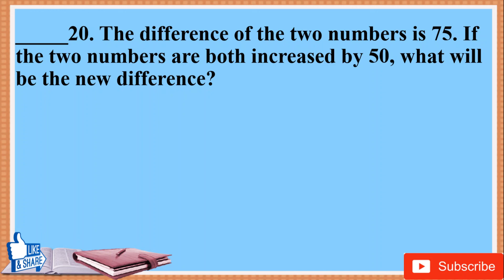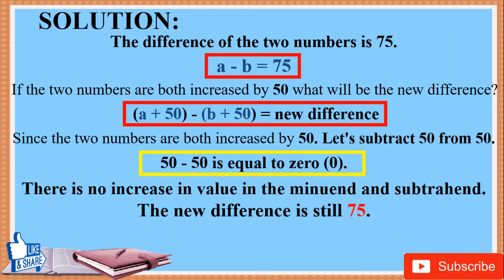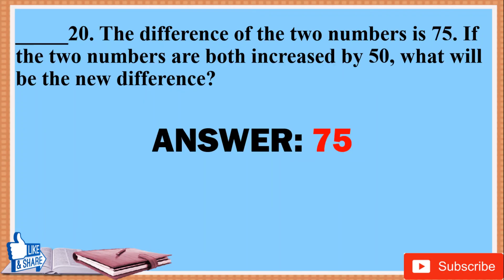20. The difference of two numbers is 75. If both numbers are increased by 50, what will be the new difference? Solution: (A + 50) − (B + 50) = new difference. Since both numbers are increased by 50, subtracting 50 from 50 equals zero — there is no net change. The new difference is still 75. Answer: 75.